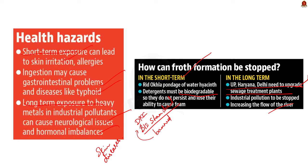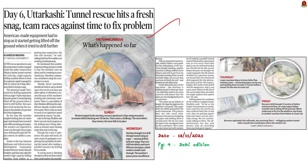These are some of the important points to remember about the frothing in the Yamuna River. Now let us move on to the next news article, which talks about the recent collapse of the Silkiyara-Barkot tunnel along the Yamuna 3 national highway in Uttarkashi district of Uttarakhand.